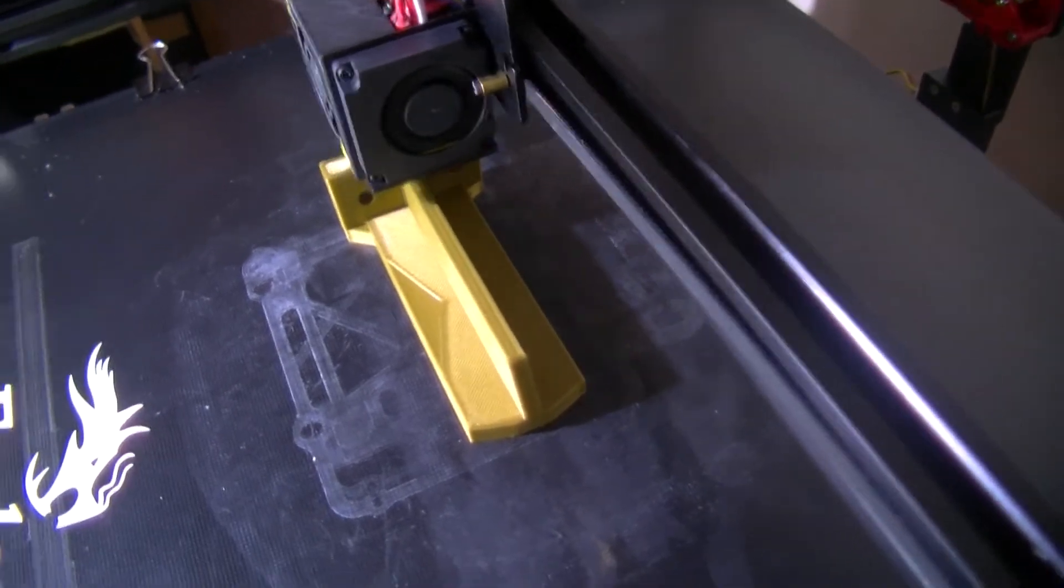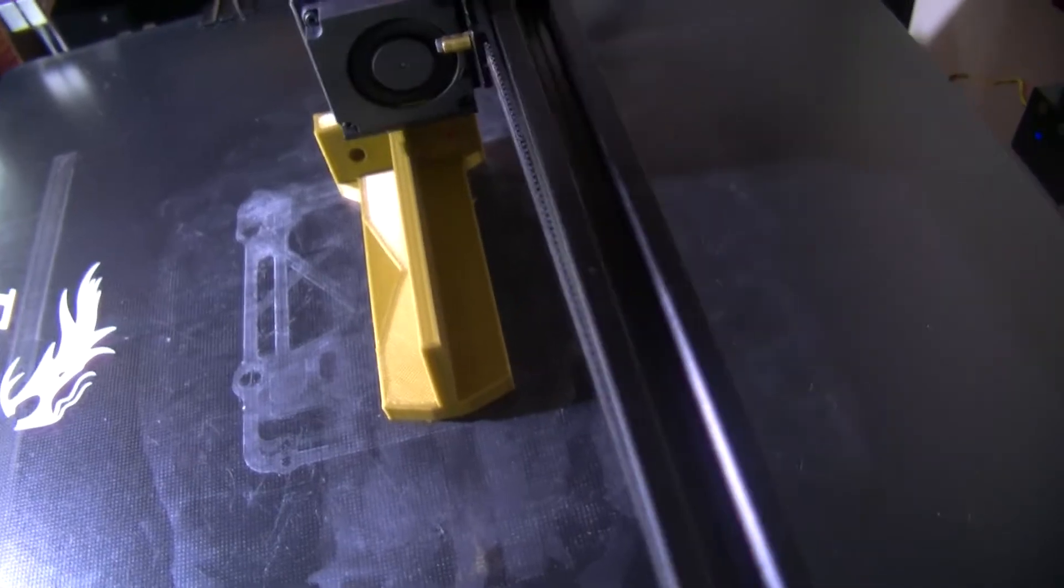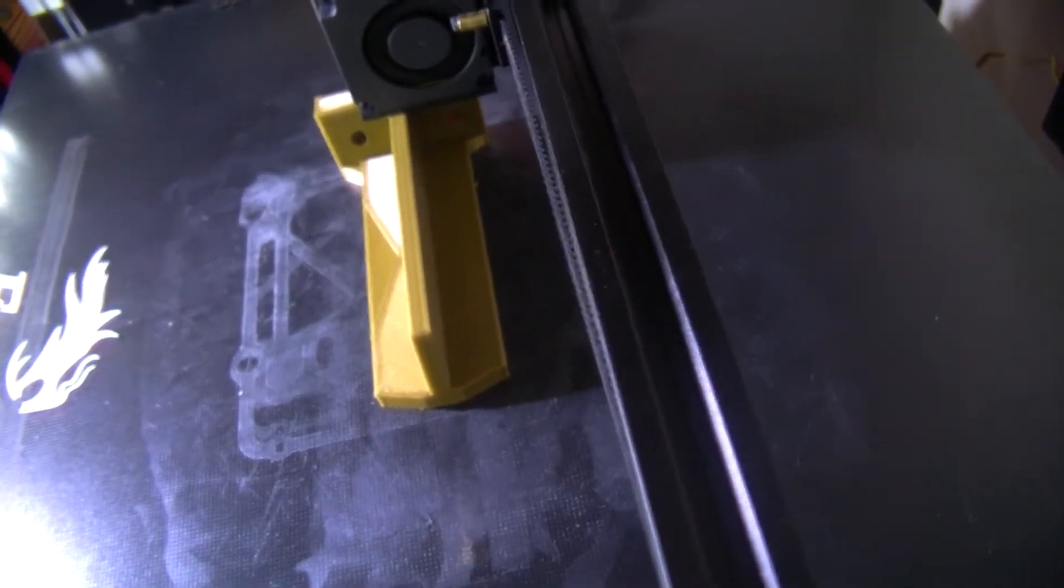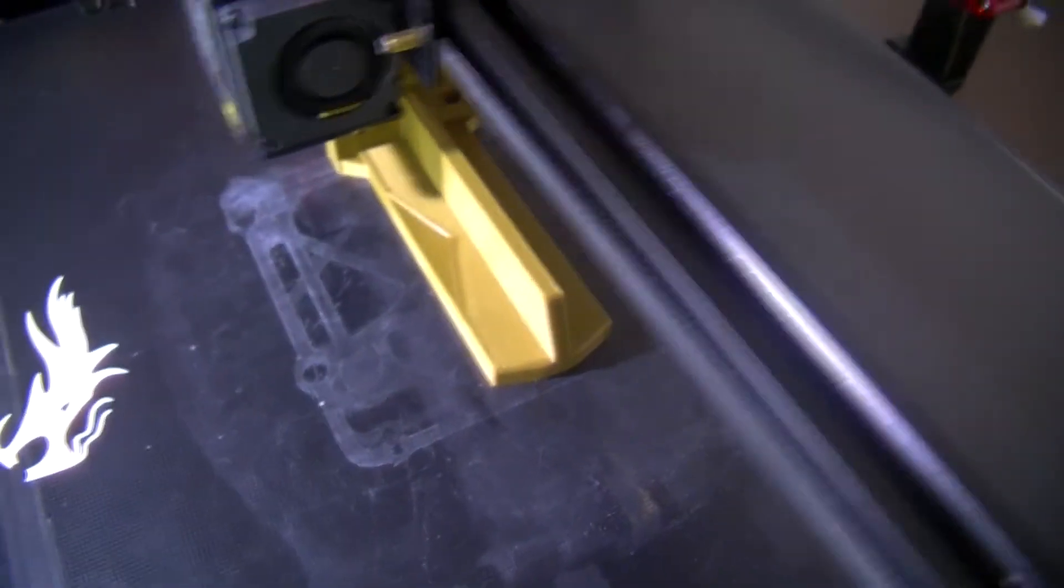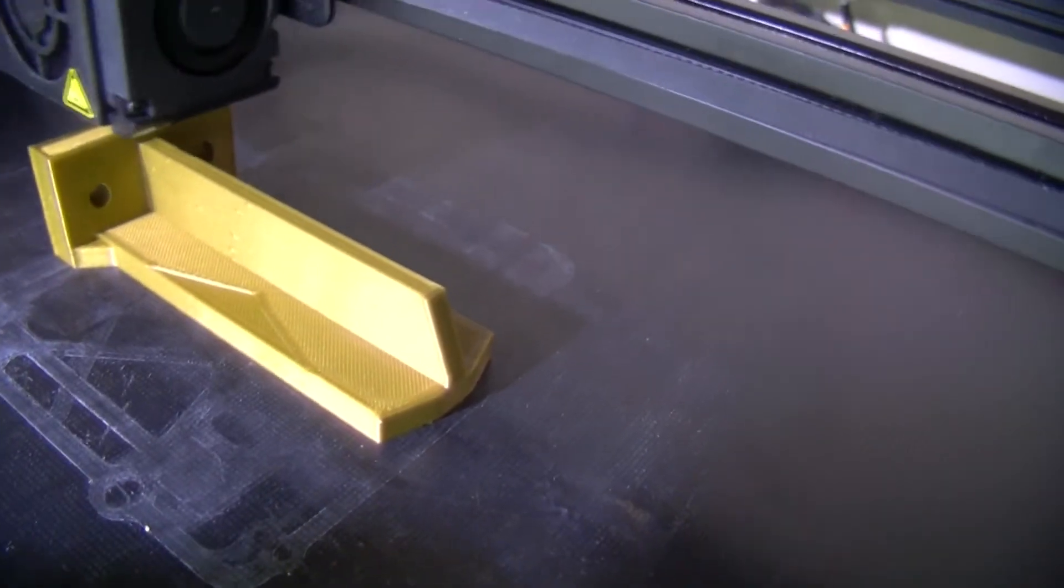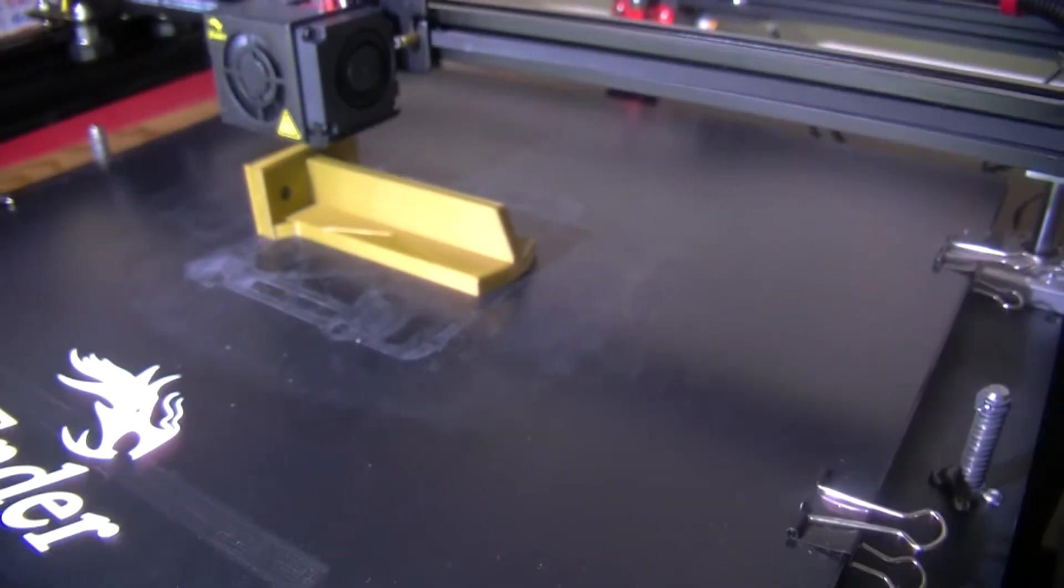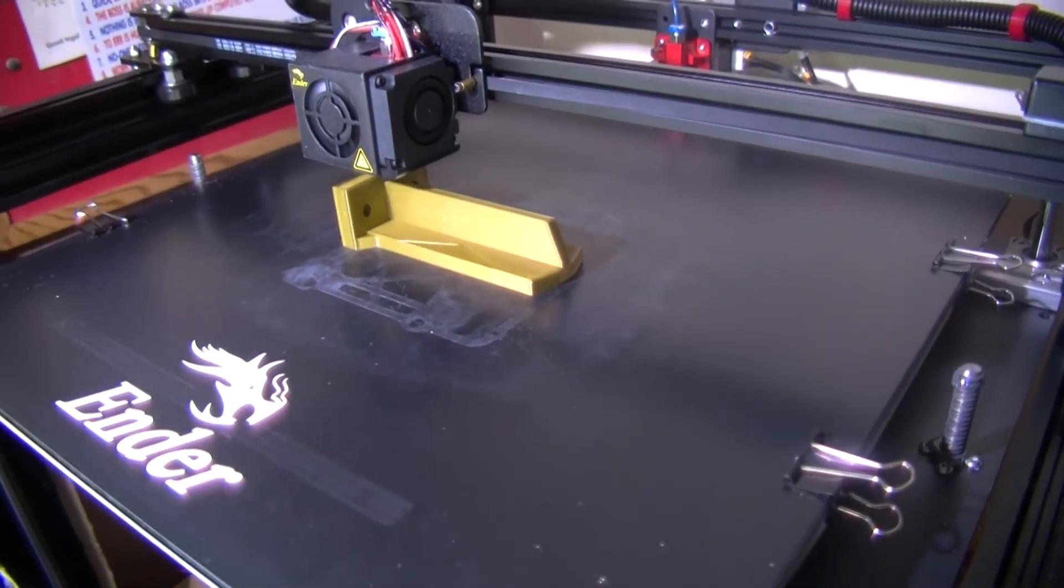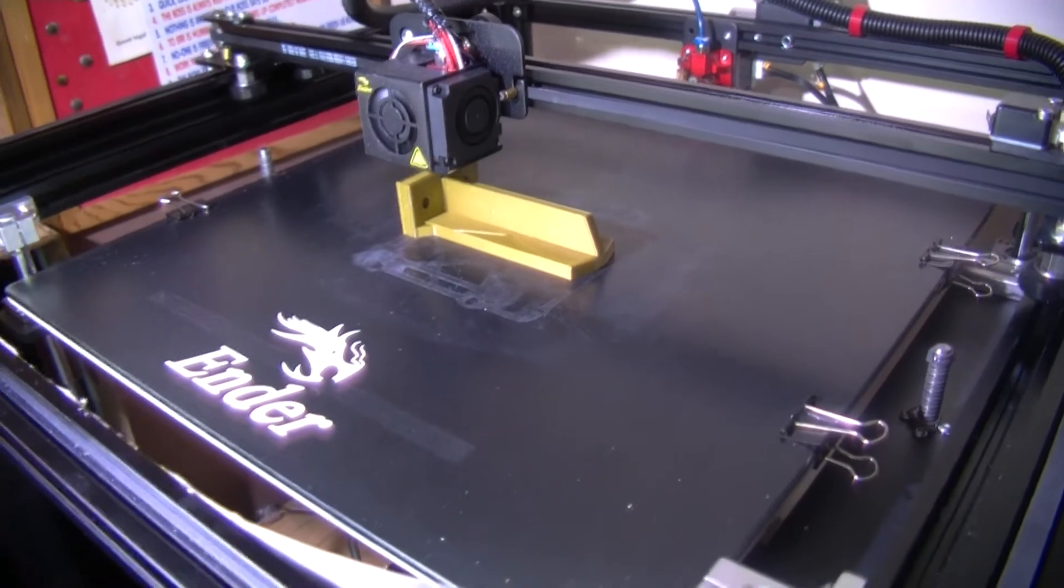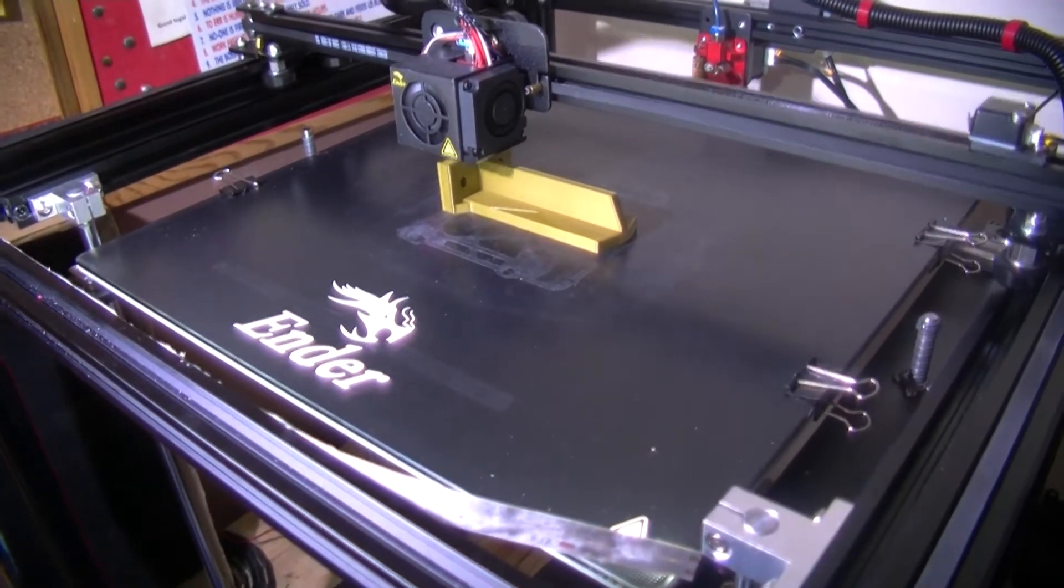It's a bit like a T-piece to give it strength. To give it strong enough. Gold PLA. Creality Ender 5 Plus.